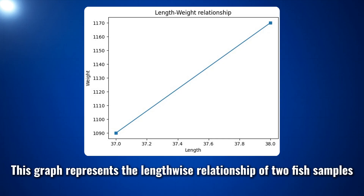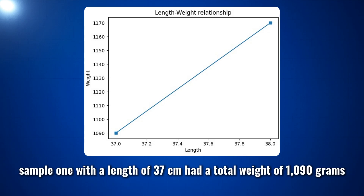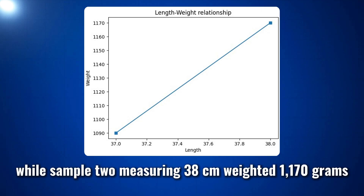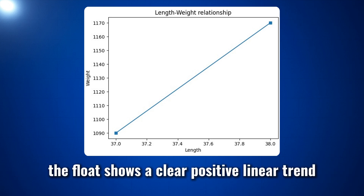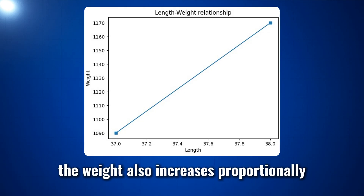This graph represents the length-weight relationship of two fish samples measured earlier. Sample 1, with a length of 37 centimeters, had a total weight of 1090 grams, while sample 2, measuring 38 centimeters, weighed 1170 grams. The plot shows a clear positive linear trend, indicating that as fish length increases, the weight also increases proportionally.